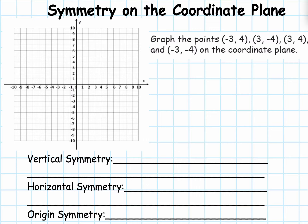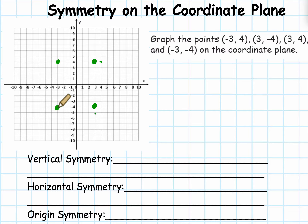We're going to graph these four points, so go ahead and pause your video and graph. Let's make sure we have our points in the correct place. Negative 3, 4 should be a point in quadrant 2. 3, negative 4 should be in quadrant 4. 3, 4 should be in quadrant 1. And negative 3, negative 4 should be in quadrant 3. I'm going to go ahead and label them A, B, C, and D.